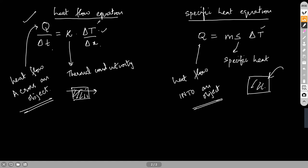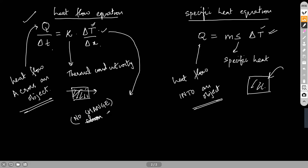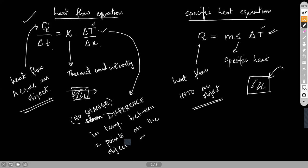An important distinction is between the ΔT in each equation. The ΔT in the heat flow equation is not a change — there is no change. There is a difference instead: a difference in temperature between two points on the object, separated by a distance Δx. So there are two points separated by that distance and the difference in temperature between them is ΔT.